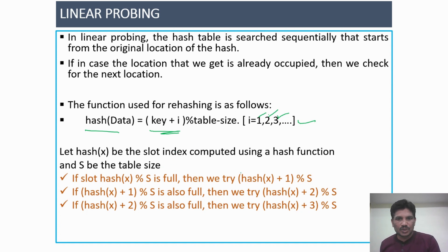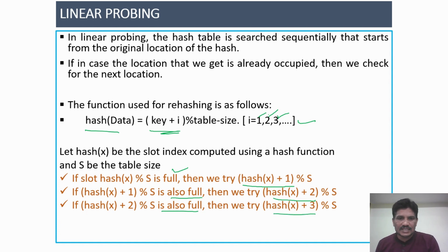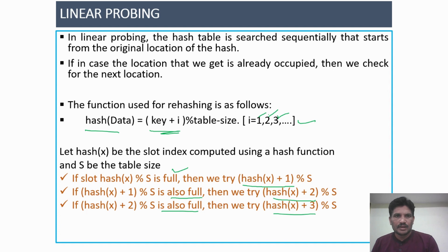Here is an example. Whenever you find the index location using the Hash key, if it is not free — if it is already occupied with some data — then we try for the next empty slot in the Hash table. This is called sequentially searching for the free empty slot in the Hash table. This is the theoretical concept about Linear Probing; how to solve the problem will be shown in the next slide.